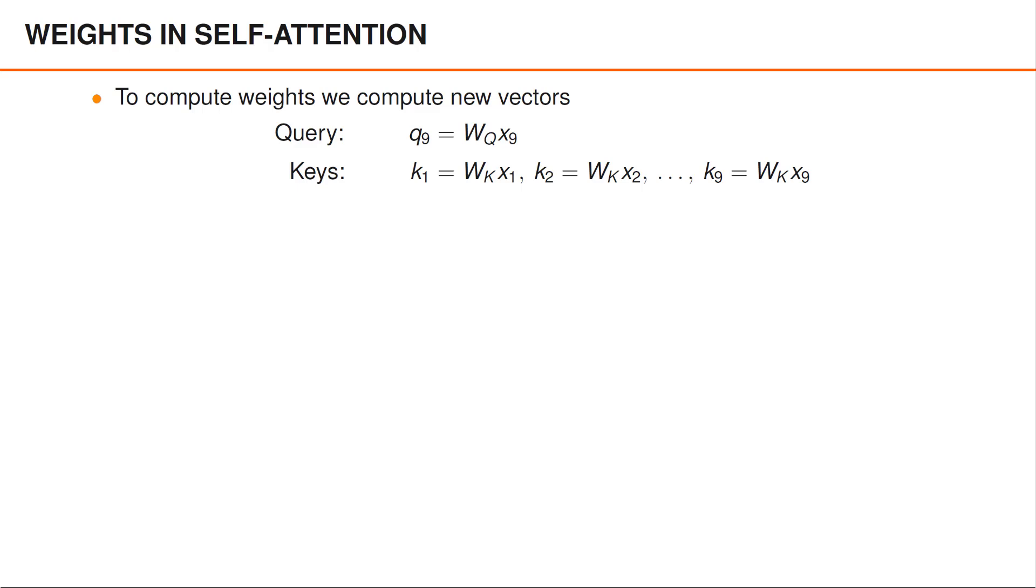Instead of directly taking the inner product between the original word embeddings, the self-attention layers in a transformer instead introduce two matrices WQ and WK that are used to transform the vectors before computing the inner products.